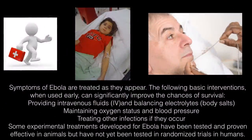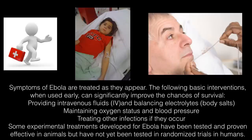The symptoms of Ebola are treated as they show up. Basic interventions, when used early, can significantly improve the chances of survival: providing IV fluids and balancing electrolytes, maintaining oxygen and blood pressure, and treating other infections if they occur. Some experimental treatments developed for Ebola have been tested and proven effective in animals but have not yet been tested in randomized human trials. We know the experience with a recent physician who came back to the United States with Ebola, received an antibody injection, and recovered well.